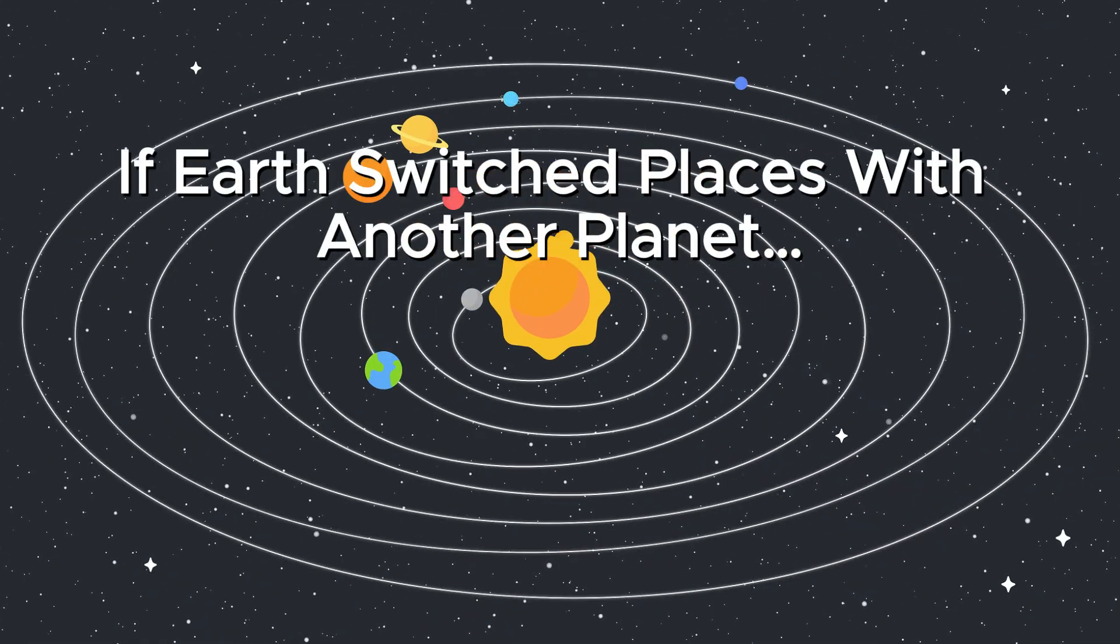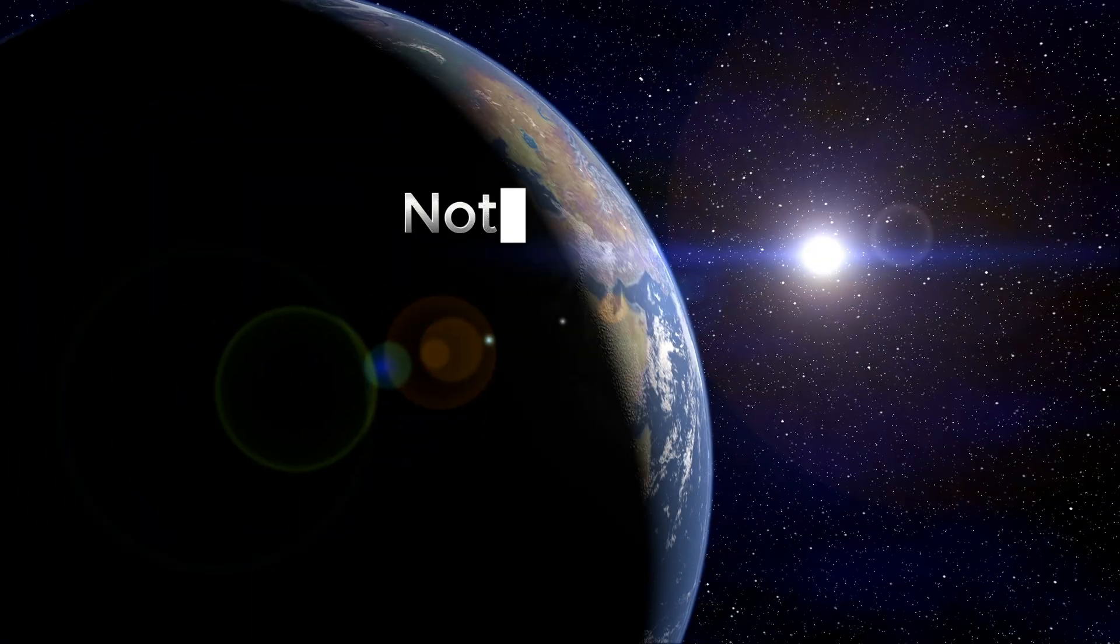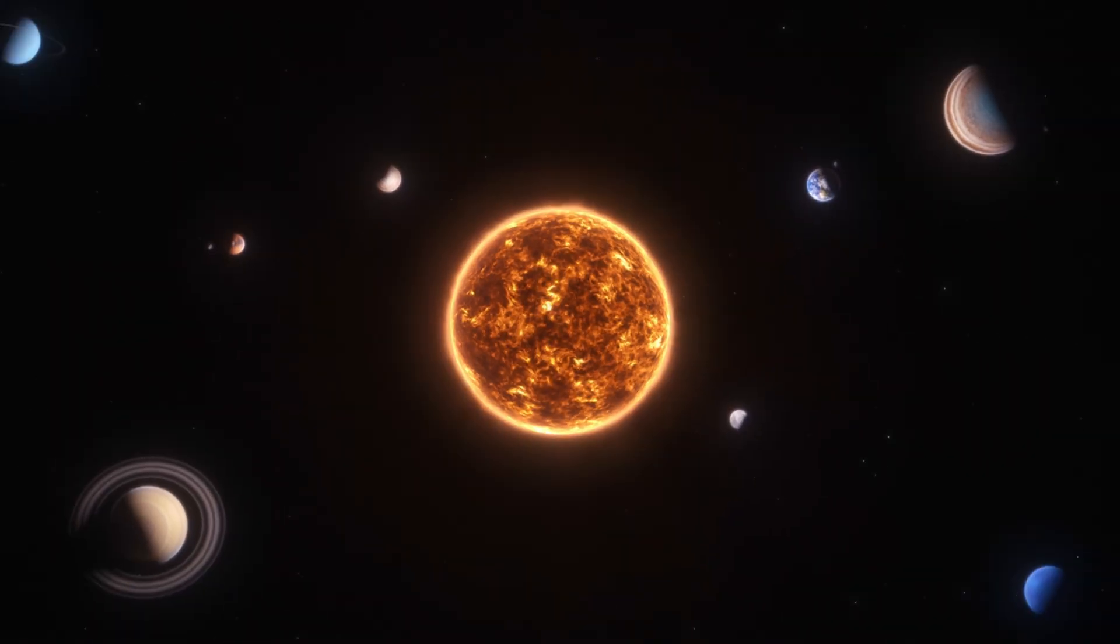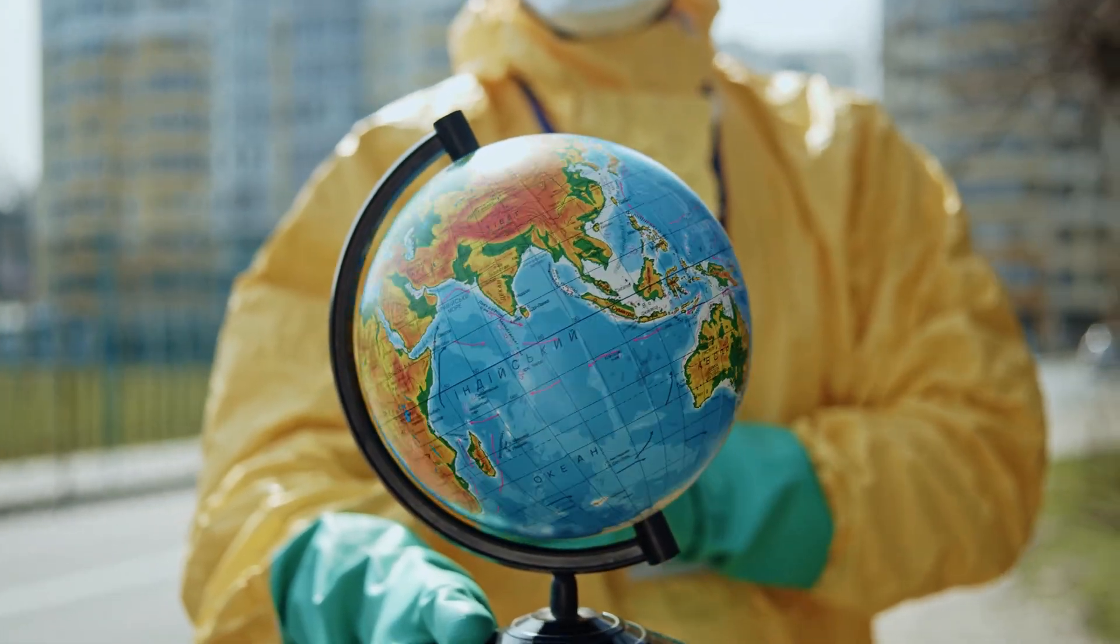Have you ever stopped to wonder why Earth is exactly where it is? Not too close to the Sun, not too far. It just works. But what if that wasn't the case? What if Earth wasn't the third planet from the Sun? How different would everything be?